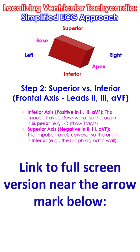Step 2 – Superior vs Inferior, from the frontal axis and leads V3 and AVF. An inferior axis — positive in leads V3 and AVF — means the impulse travels downwards, so the origin is superior. Example: outflow tract ventricular tachycardias. A superior axis — negative in leads V3 and AVF — means the impulse travels upwards, so the origin is inferior. Example: the diaphragmatic wall.